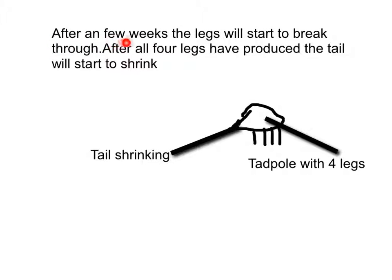After a few weeks, the legs will start to break through. After all four legs have produced, the tail will start to shrink. Here is a picture of a tadpole with its tail shrinking and it has four legs.